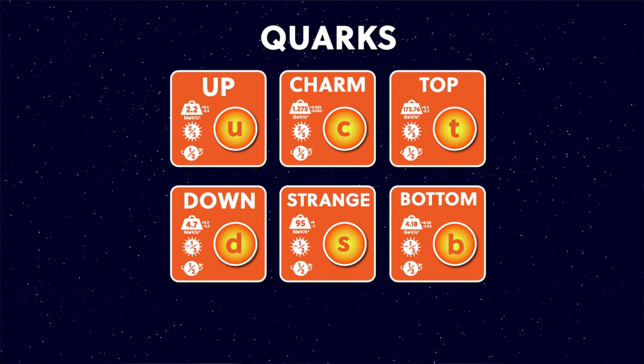The other quarks — the charm, strange, top and bottom quarks — are just like the up and down quarks, but with larger masses. Also they're unstable. In the first fraction of a second after the big bang, all of these decayed down into the up and down quarks via the weak force. But that doesn't mean they don't exist in the universe today — you can still find these heavier quarks in high energy cosmic environments, things like supernovae or neutron stars, and we also create them in our particle accelerators.